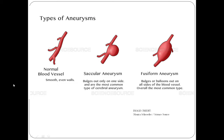Briefly about the types of aneurysm. Normally a blood vessel has smooth and even walls. The second diagram shows a saccular aneurysm, where there is bulging out from only one side of the wall — these are the most common types of cerebral aneurysms. A fusiform aneurysm is when there is ballooning out from all sides of the blood vessel, and it is the most common type of aneurysm in other body parts.